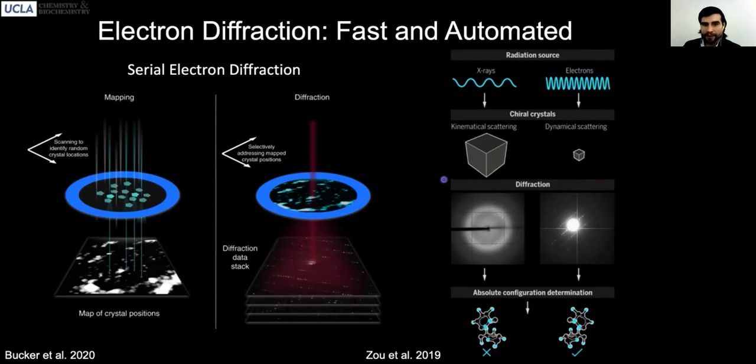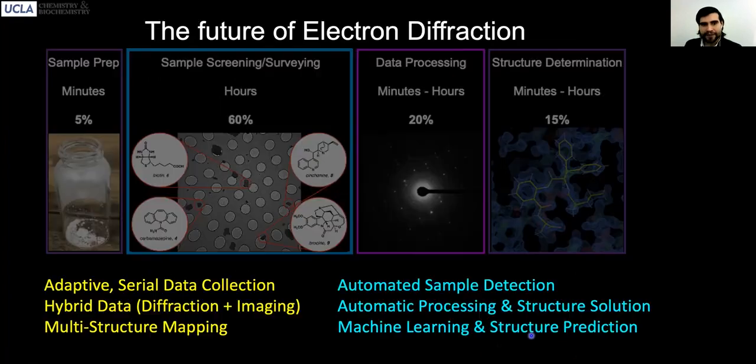In doing so, we're also able to exploit the very strong interaction of electrons with matter to determine, for example, properties of the material that would otherwise be elusive, like the absolute handedness of that material. That's an exciting new discovery that's allowing us to interrogate molecular structures with unprecedented detail.